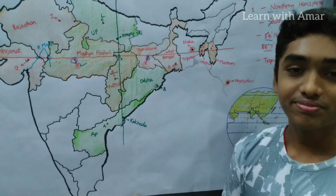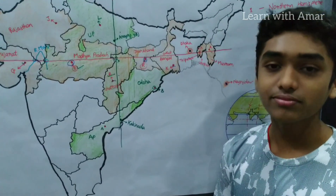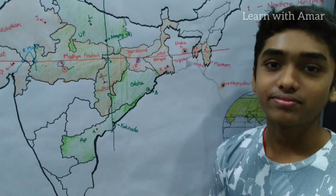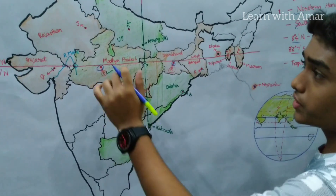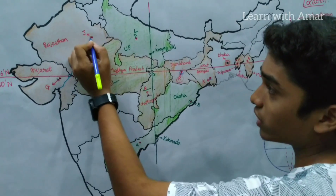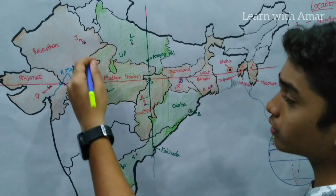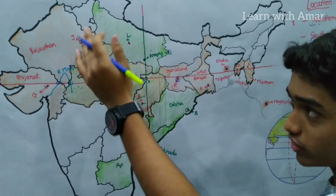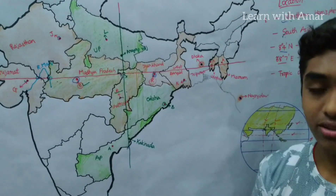Among those 8 capital cities, which capital city is farthest from the Tropic of Cancer? It is Jaipur of Rajasthan, which is very far away from the Tropic of Cancer.